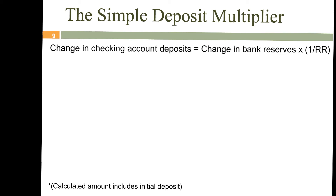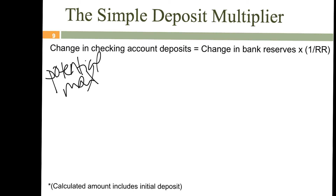So, just to remind us: what we want to calculate is the potential maximum change in checking account deposits. The potential maximum change in checking account deposits equals the change in bank reserves multiplied by 1 over RR. The change in bank reserves can either be a deposit — in which case it's positive — or a withdrawal, in which case we simply put a negative there.